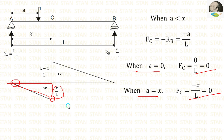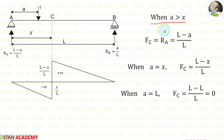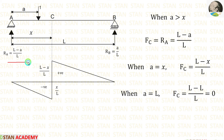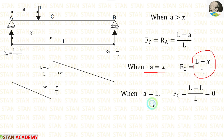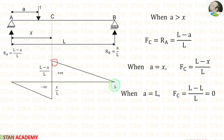Now let us make the diagram for positive shear force. When A is greater than X, we have to calculate the shear force on the left side. On the left side, we are having only one load — that is R_A, which is equal to (L minus A) by L. In this case, we are moving on the right-hand side, so upward forces will be positive, and R_A will be positive. When A is equal to X, the shear force will be (L minus X) by L. When A is equal to L, the shear force will be 0. Using that, we can make the two points and make the second triangle. So we have made the influence line diagram for positive shear force and negative shear force.